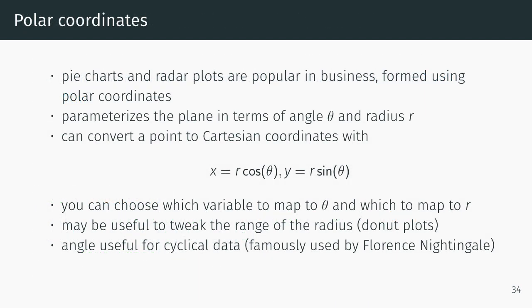The second thing he discusses are polar coordinates. Pie charts and radar plots are popular in business, formed using polar coordinates. It parameterizes the plane in terms of angle theta and radius r. You can convert a point to Cartesian coordinates using these two equations: r times cosine of theta and r times sine of theta to get x and y coordinates.